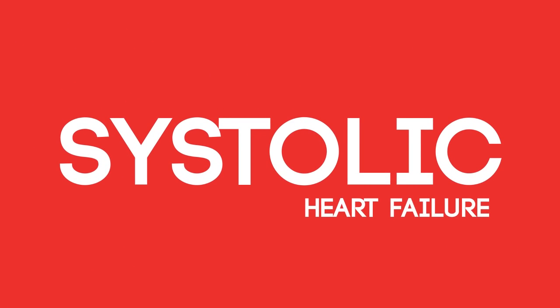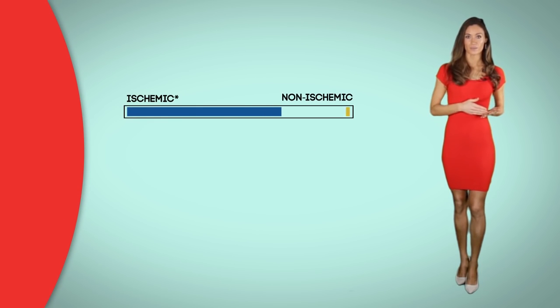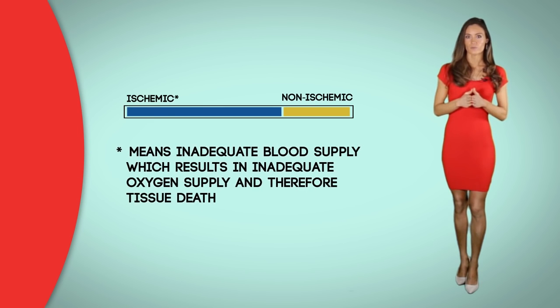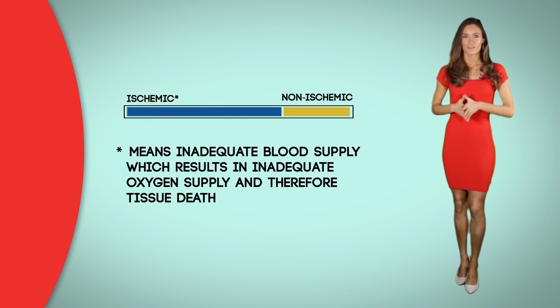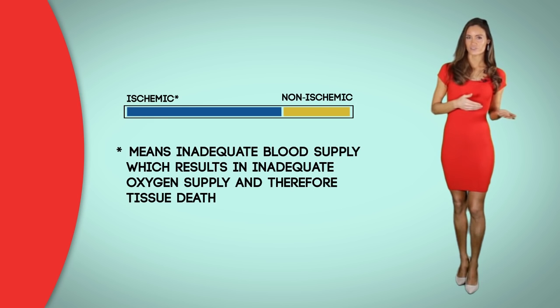When examining systolic heart failure, about 70% are ischemic and 30% are non-ischemic. The word ischemic means inadequate blood supply, which results in inadequate oxygen supply, and therefore tissue death.